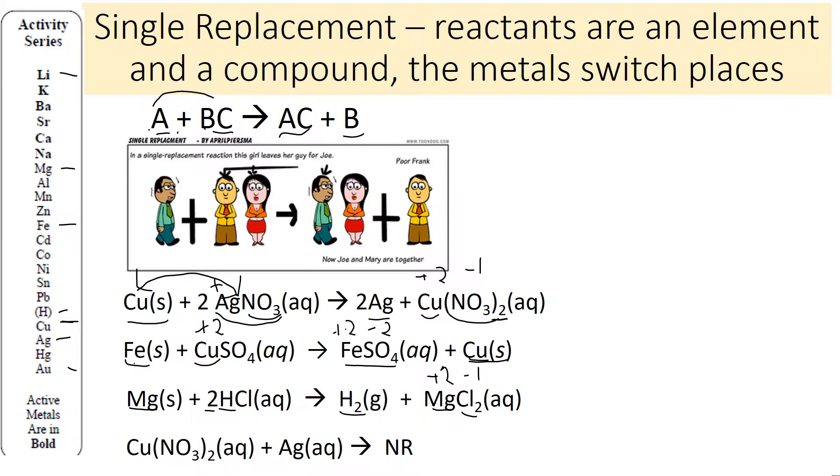Let's look at the last one. The metals we have are copper and silver. We've already looked at copper and silver. Here they are. The one that's higher is copper, which means copper should be in the compound. Well, it is. Copper is in the compound. So it's already happy, nothing's going to happen, and that's why we put NR, no reaction. It's happy the way it is, it's not going to switch.